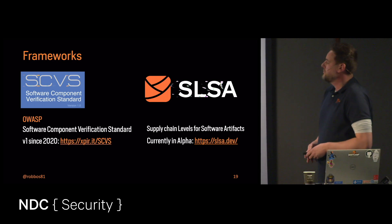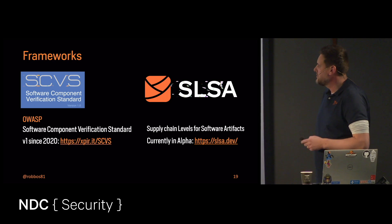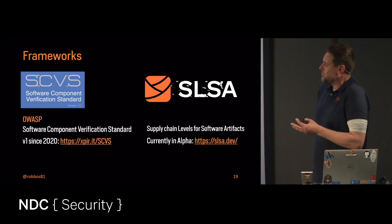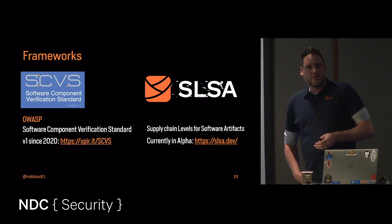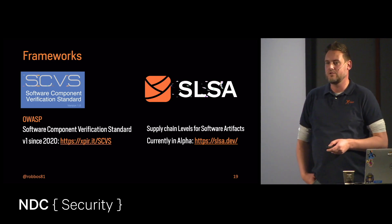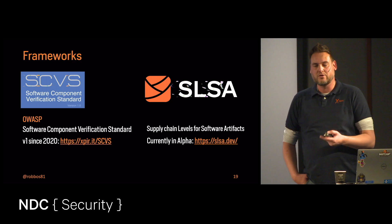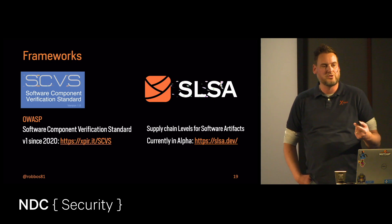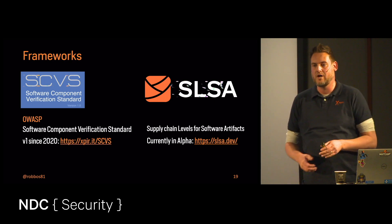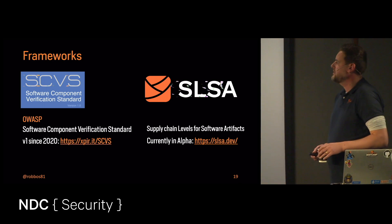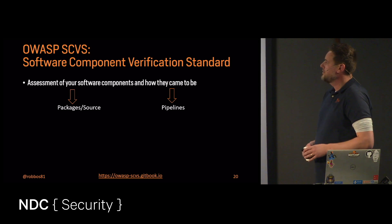I like the OWASP one most and I'll go deeper into that. SLSA is new and upcoming and does things a bit differently — I'll leave that for you to explore. The OWASP SCVS has been at v1 since 2020 and almost nobody in our industry knows about it. I'm trying to preach it: it's a standard you can map your own supply chain against, and from there improve your maturity levels in how you verify your pipeline and software components.